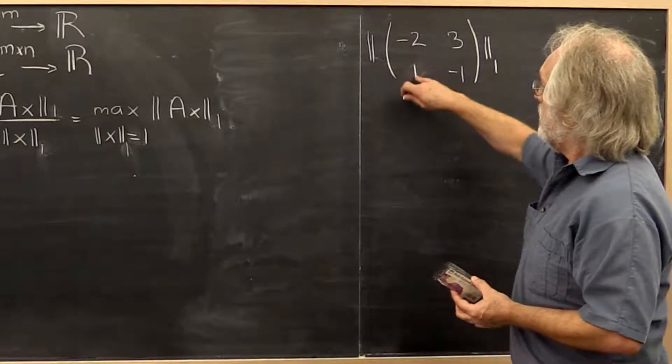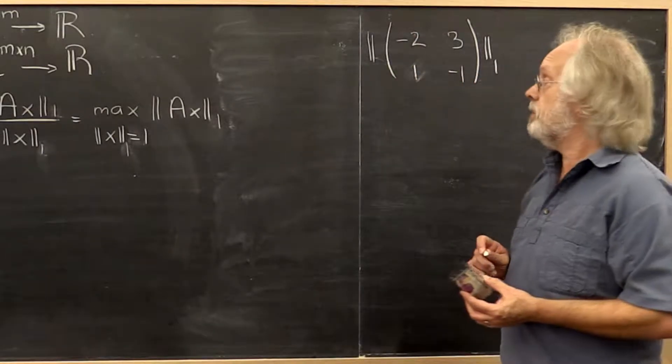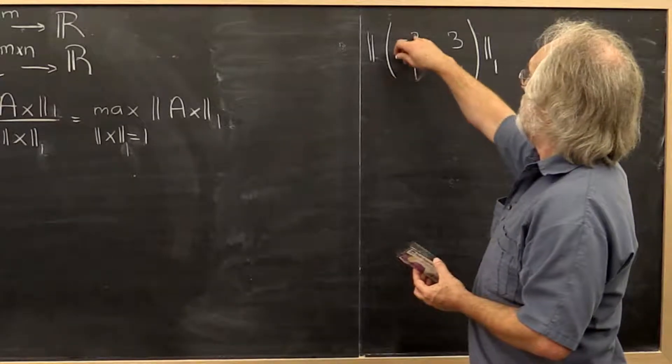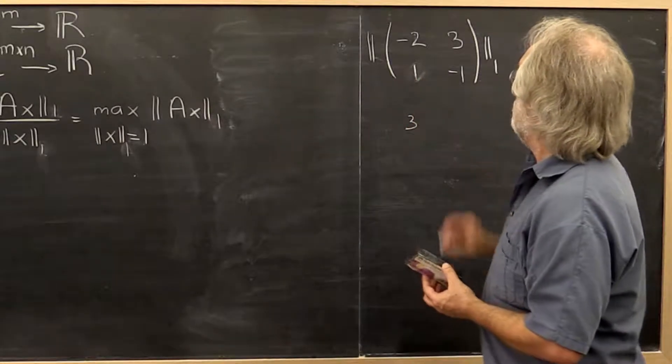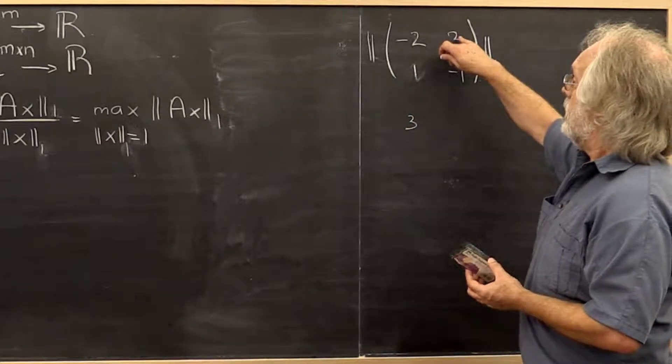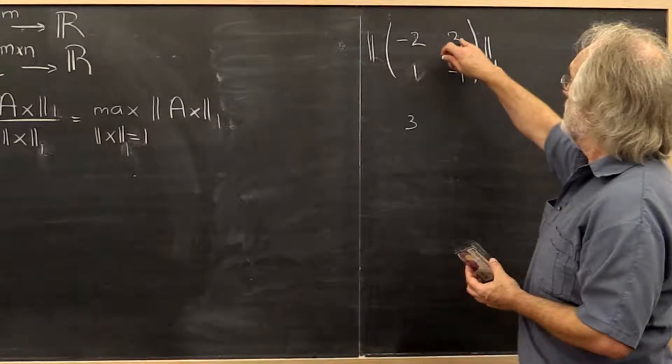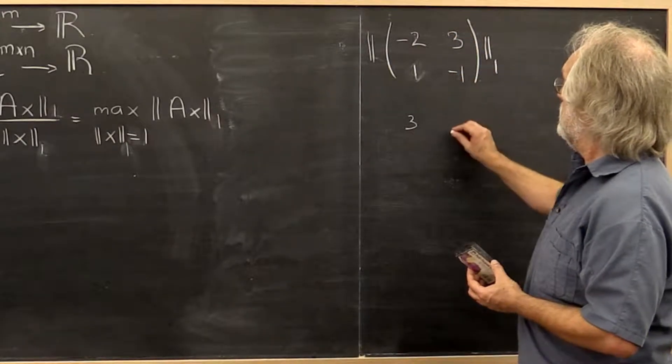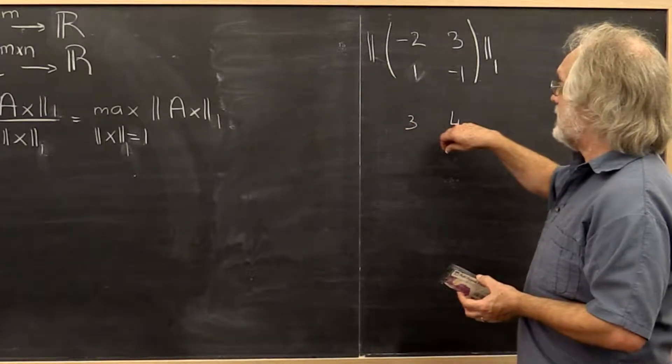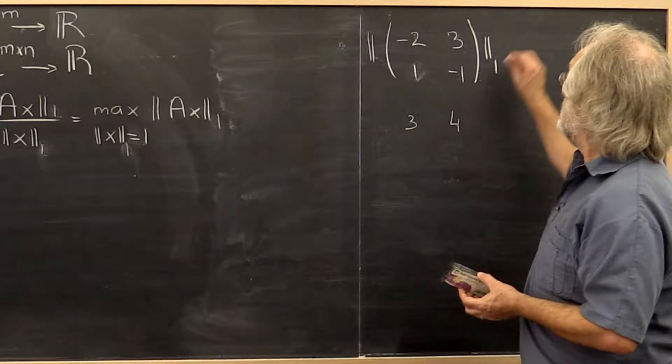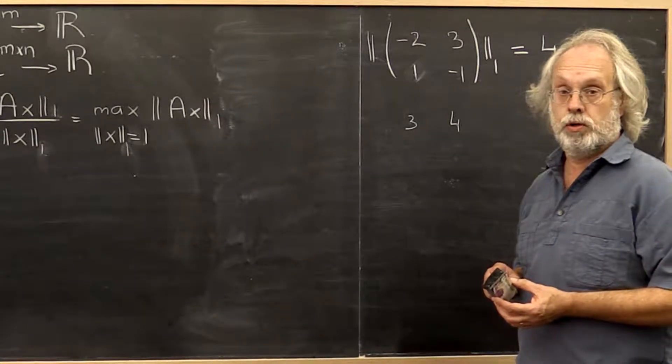You compute the vector 1 norm of the first column. What is that? Absolute value of 2 plus absolute value of 1 is 3. You compute the vector 1 norm of the second column. What is that? 3 plus 1 is 4. And then you look at the maximum of those two. And the maximum of those two is the 1 norm of the matrix.